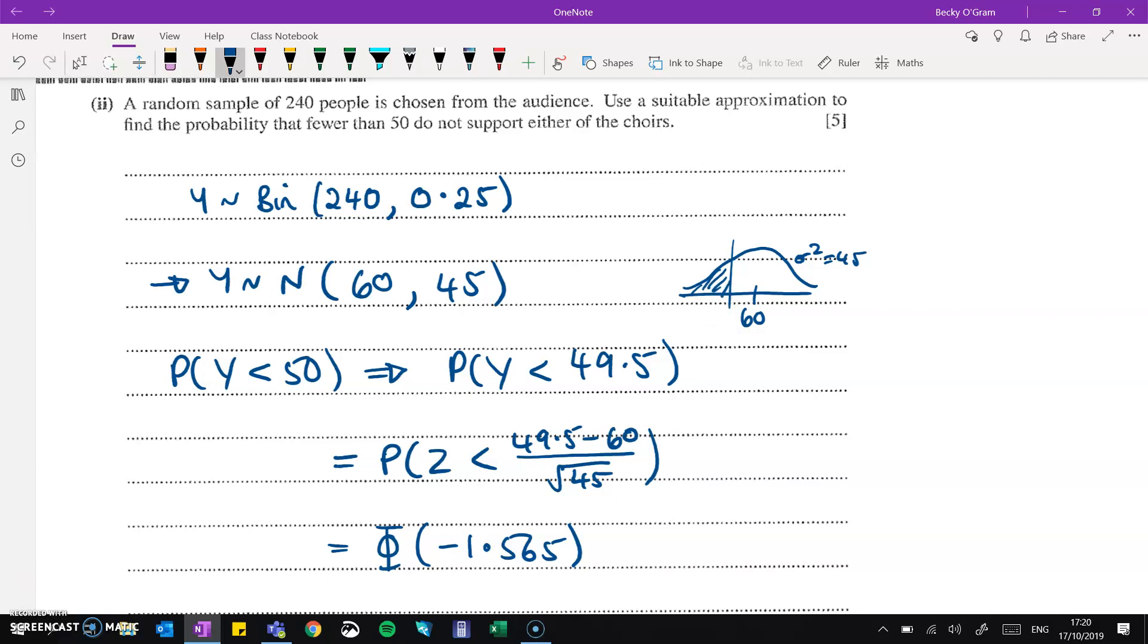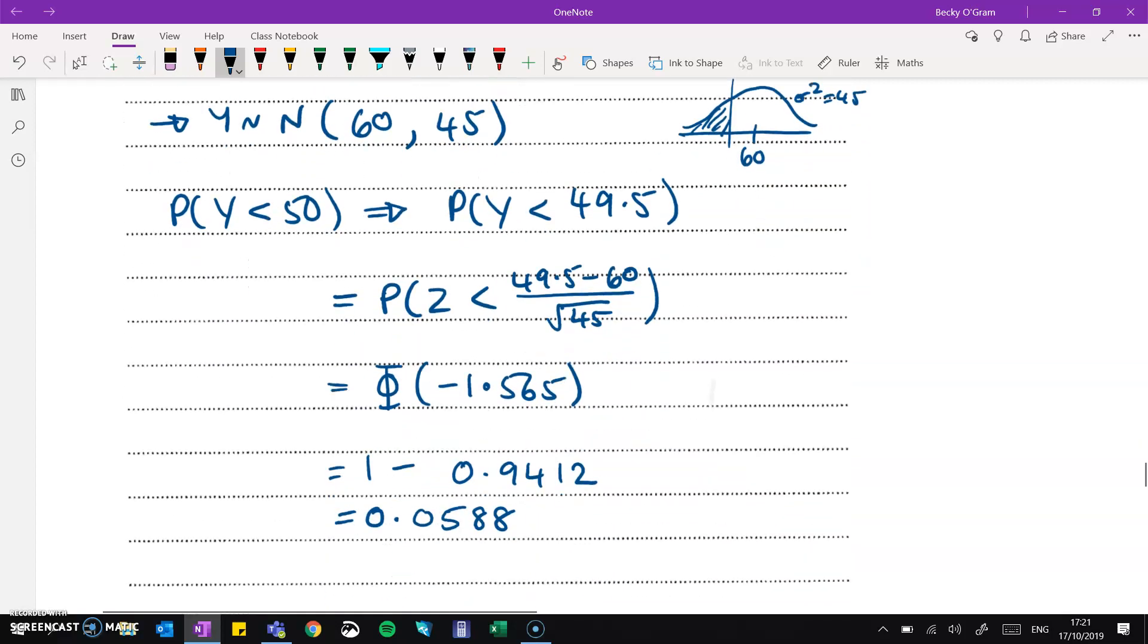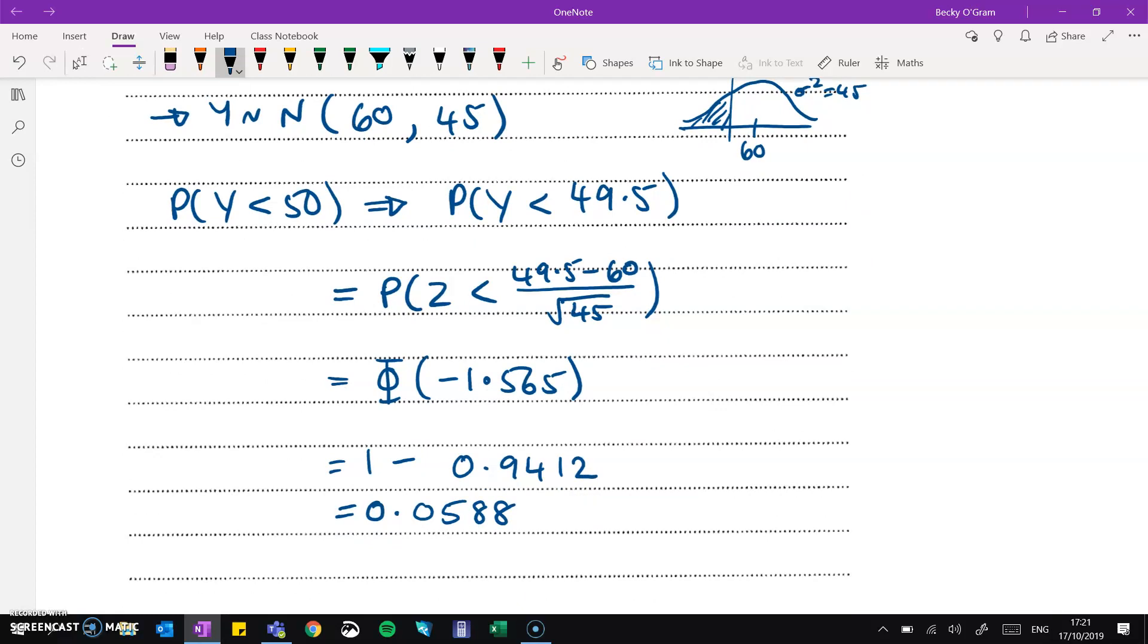Then a sample of 240 people is chosen at random from the audience. Use a suitable approximation to find the probability that less than 50 of them do not support either of the choirs. So we've got a binomial again with 240 trials. The chance of getting the thing that we're looking for is 0.25, that they don't support either of the choirs. This can be done as an approximation using the normal distribution, which means that we have to apply a continuity correction and then carry on working that through, and you get 0.0588.